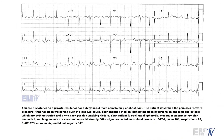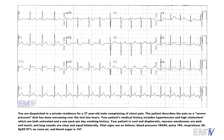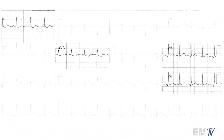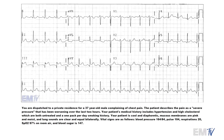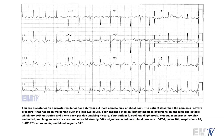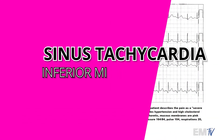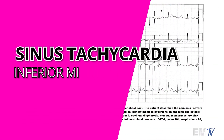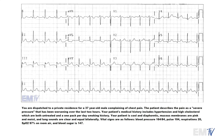Even though I have ST segment elevation and I'm prepared to diagnose this patient, I should also examine the lateral leads. Your lateral leads are 1, aVL, V5, and V6. There is some ST depression in leads 1 and aVL, but no ST segment elevation found anywhere here. My diagnosis of this patient is sinus tachycardia with an inferior MI. Let's go ahead and look at the scenario and devise a treatment plan.